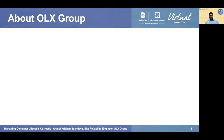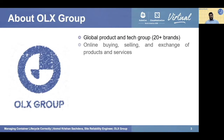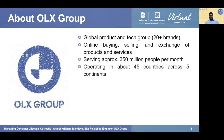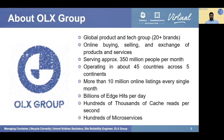Now let's have a look at the OLX Group. OLX Group is a global product and tech group consisting of 20-plus brands. We are an online buying, selling, and exchange platform serving approximately 350 million people per month, and we are present in around 45 countries across five continents. We have more than 10 million online listings every single month, billions of widgets per day, and hundreds of thousands of cache reads per second — all backed by hundreds of microservices running in our Kubernetes clusters.